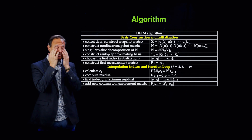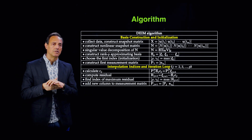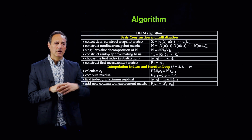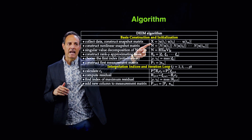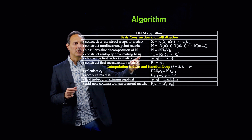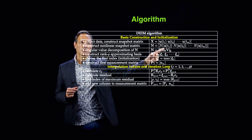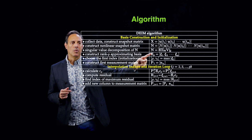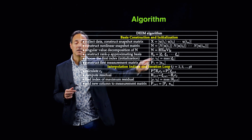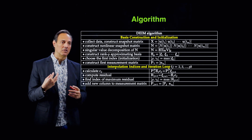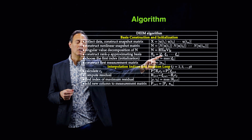Here is the DEIM algorithm from Chaturantabut and Sorensen. First, you collect your data matrices X into snapshots U1 through N, SVD them to get your low-dimensional subspace. But also you collect the nonlinear terms — the nonlinear term evaluated at U(T1), U(T2), and so forth — and SVD those nonlinear terms. You do a rank-P approximation of the nonlinear terms. The matrix C here is like the POD modes but for the nonlinear term, and you take C1 through C_P.